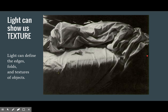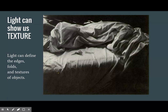Light can show us texture. Especially directional light — strong light coming from one direction, from the side rather than overhead — can define the edges and folds and textures of objects. If this picture was taken with very even diffused light from above it would just be white on white, but with the strong contrasting light from the side we see all of the wrinkles. It kind of reminds me of those beautiful Greek and Roman sculptures that have the very defined folds in the togas and the clothing.